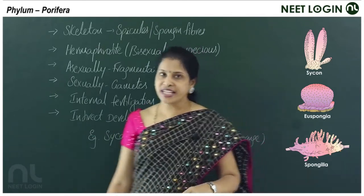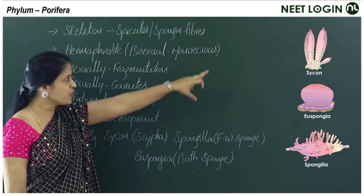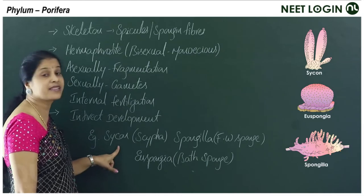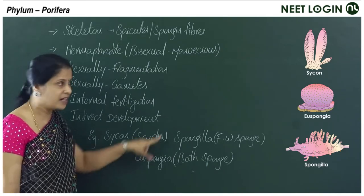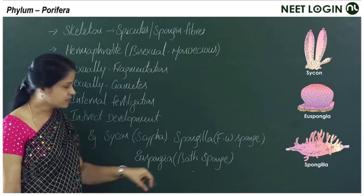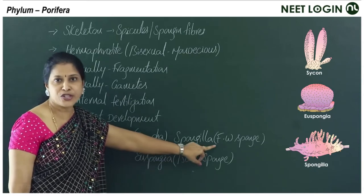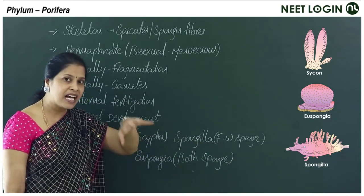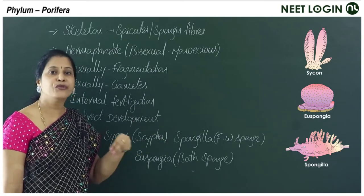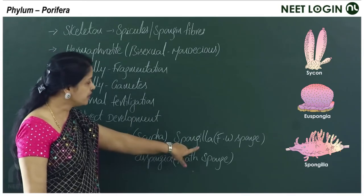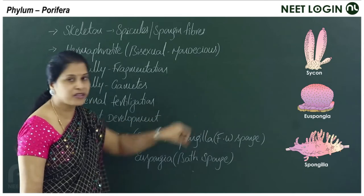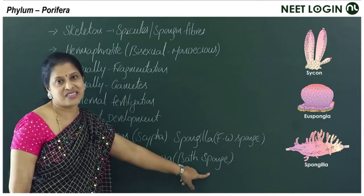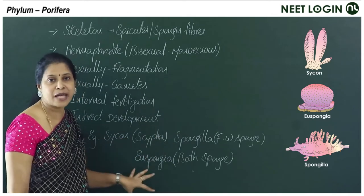Examples of poriferans include Sycon and Scypha. Spongilla is a freshwater sponge — while the majority are marine, a few are freshwater. These are good examples to learn.